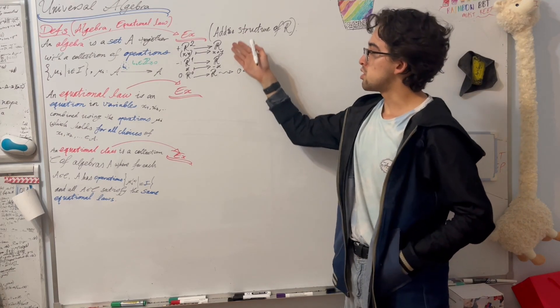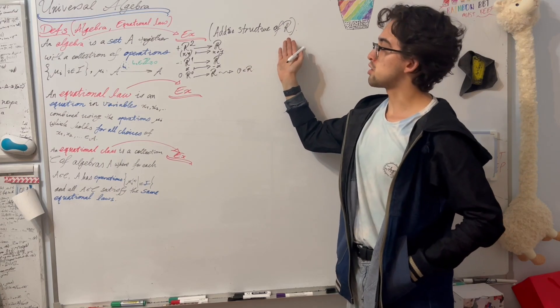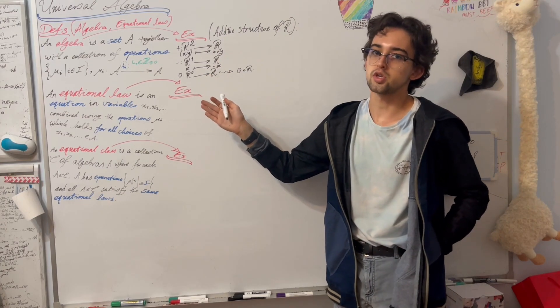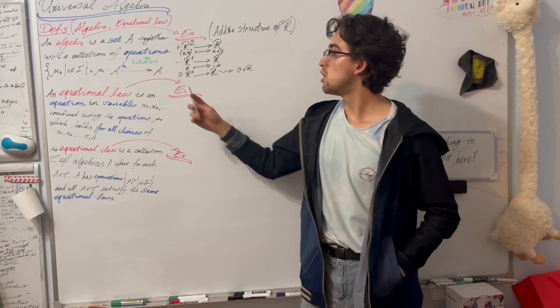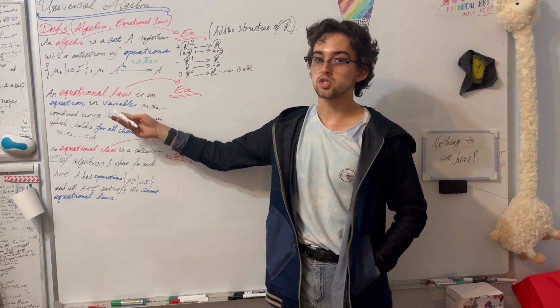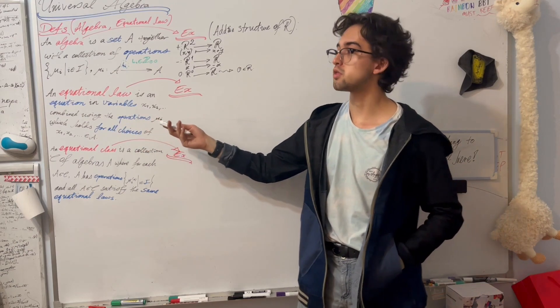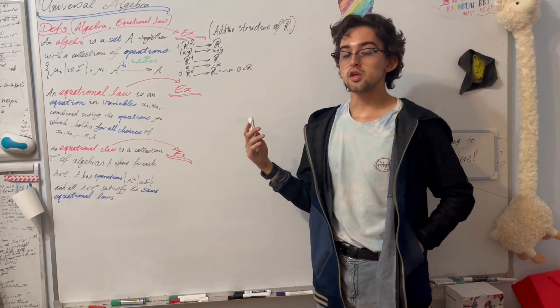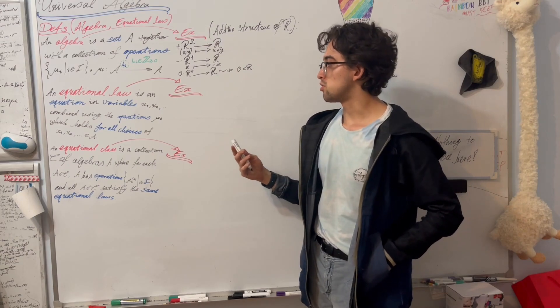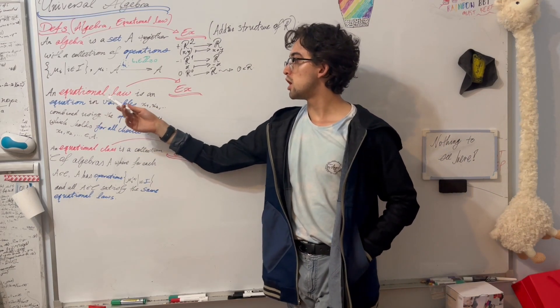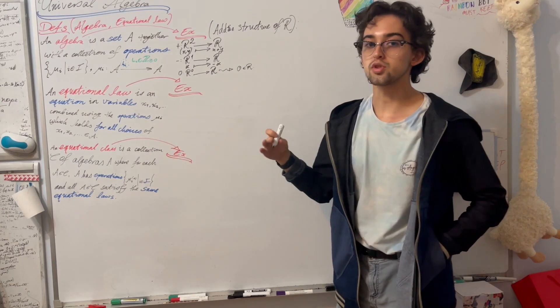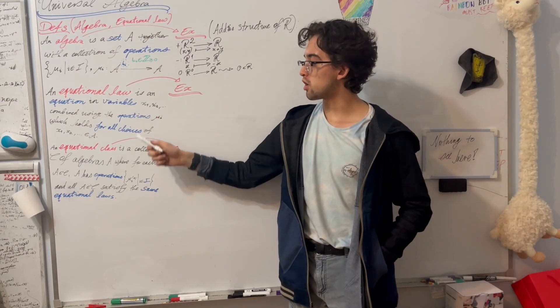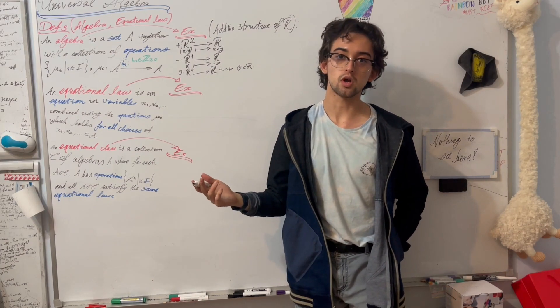Of course, it's all well and good to list a set with some operations on it, but that isn't as useful unless we consider the relationships between them and the relationships that the operations hold. These are often encapsulated in equational laws, which is simply an equation in variables combined using the operations, which holds true of all choices for the variables taken from our algebra A.